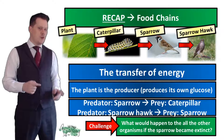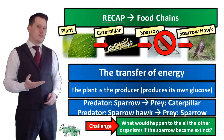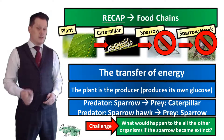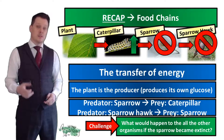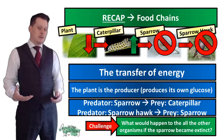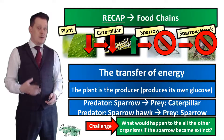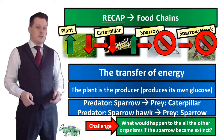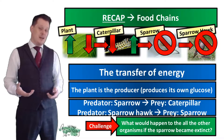What would happen to all the other organisms if the sparrow became extinct? The sparrowhawk wouldn't have anything to eat, so it would decrease in number and possibly become extinct. Because nothing is eating the caterpillar, caterpillar numbers would go up, and more caterpillars would eat more plants, so plant numbers would go down. But then fewer plants means more caterpillars go hungry and die, so caterpillar numbers come back down, allowing plants to increase again — resulting in no net change.